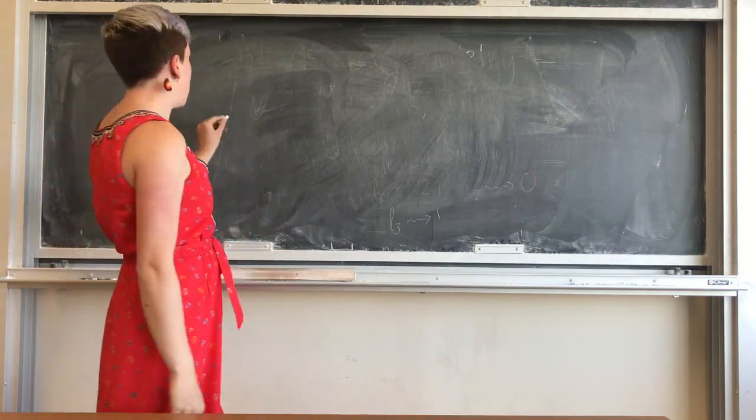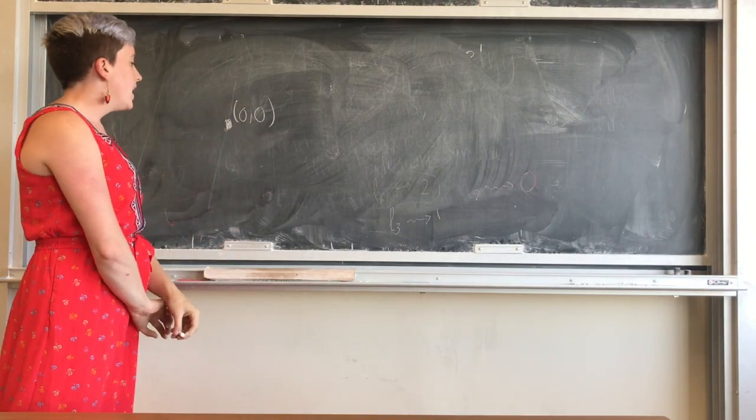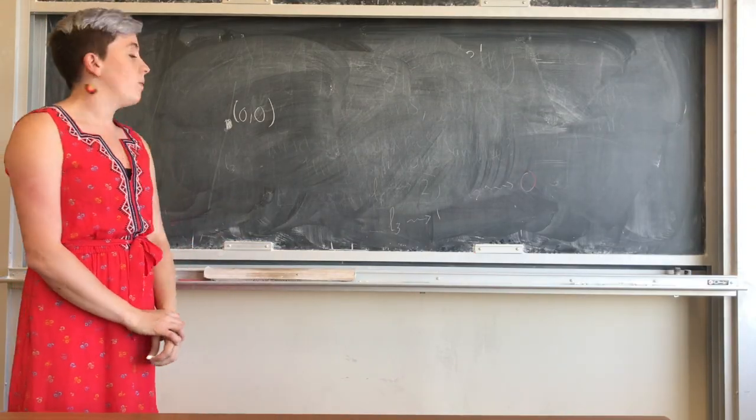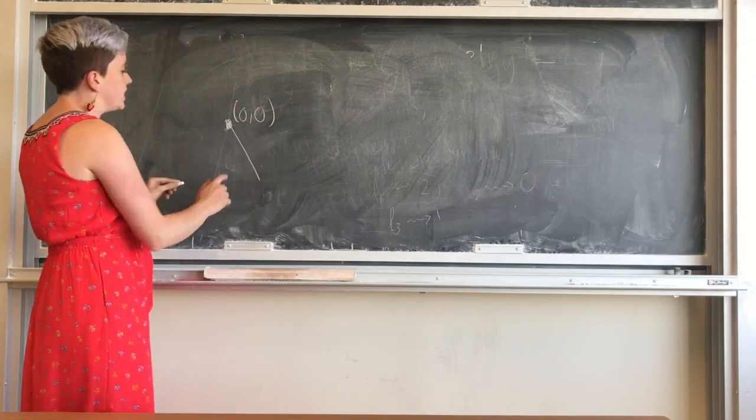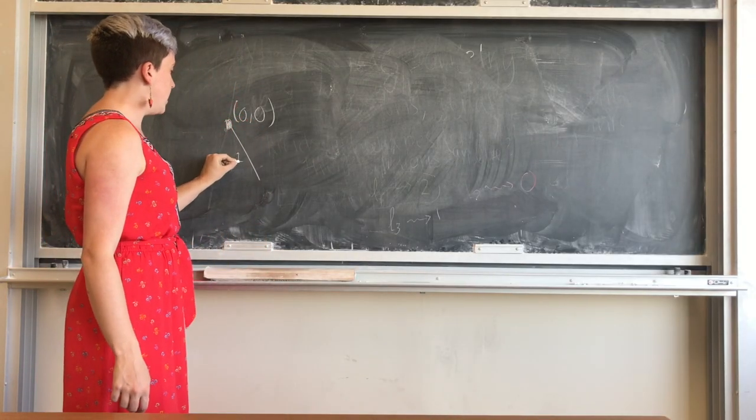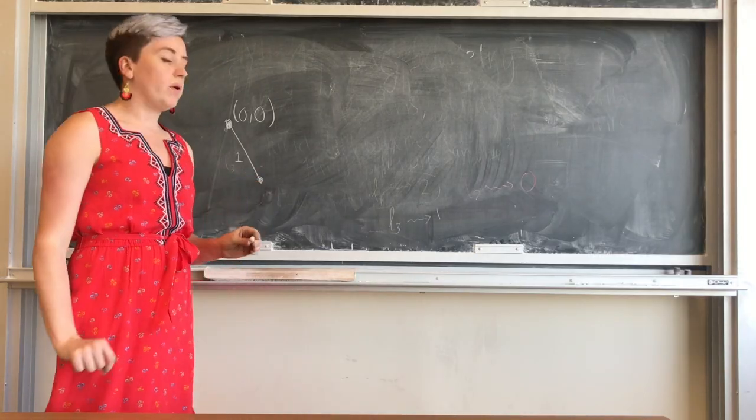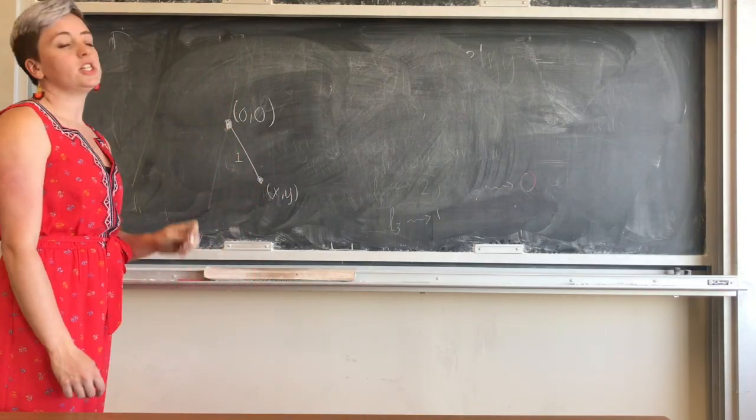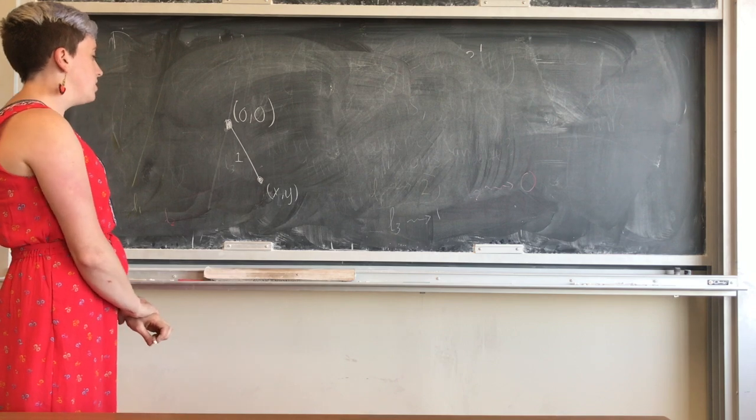Let's say I start with this point in the plane, 0, 0, and I want to know all of the points that are distance 1 away from that point. For example, if I draw this line segment that has length 1, then at the end of it there will be a point, which I'll call x, y, that is distance 1 away from this starting point, 0, 0.